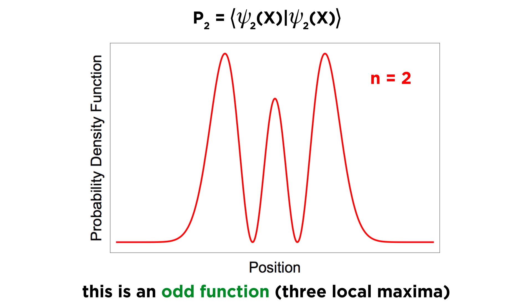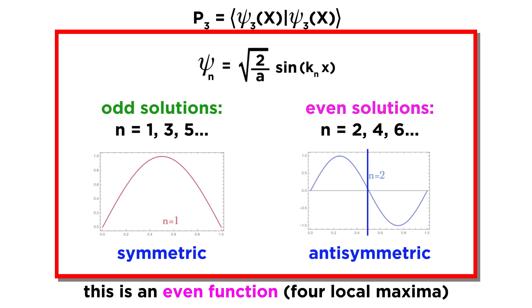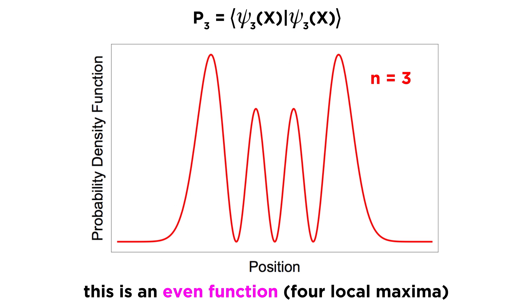The second excited state is an odd function again, and that will look like this. Then we can look at the third excited state, which becomes even again. This is reminiscent of the particle in the box, where we also found both odd and even solutions. This is a very common result for symmetric systems such as the harmonic oscillator, which are mirror images of themselves with respect to a central axis.